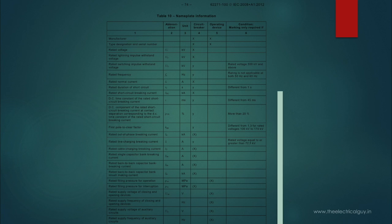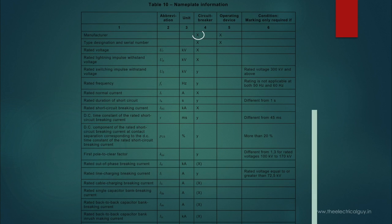As per IEC, these are the parameters which should be mentioned on the nameplate of a high voltage circuit breaker. Some of them are mandatory and some of them are optional based on specific conditions. Parameters marked with X are mandatory as per standard. All manufacturers producing circuit breakers based on this standard should mention all parameters marked with X on the nameplate.